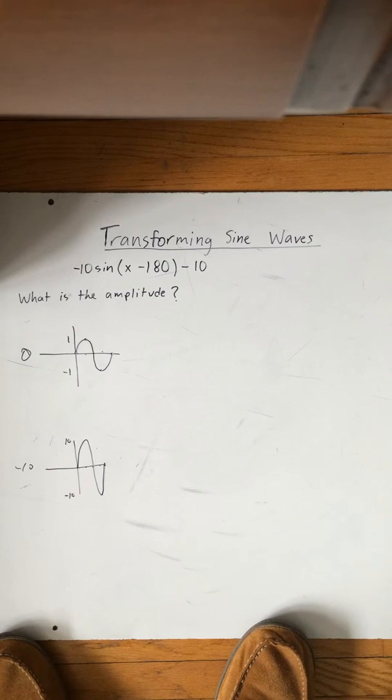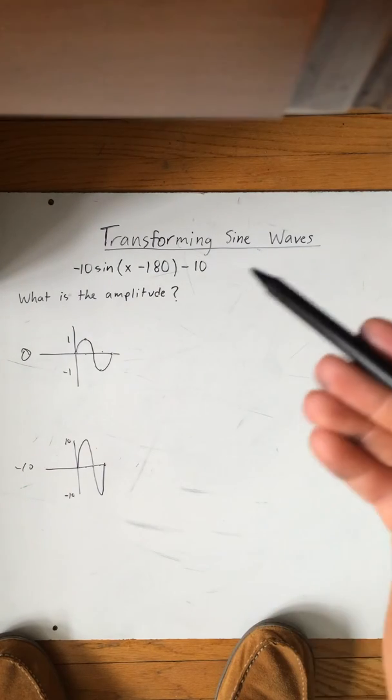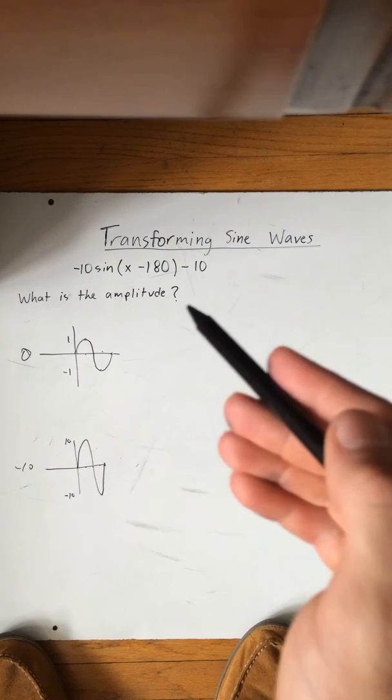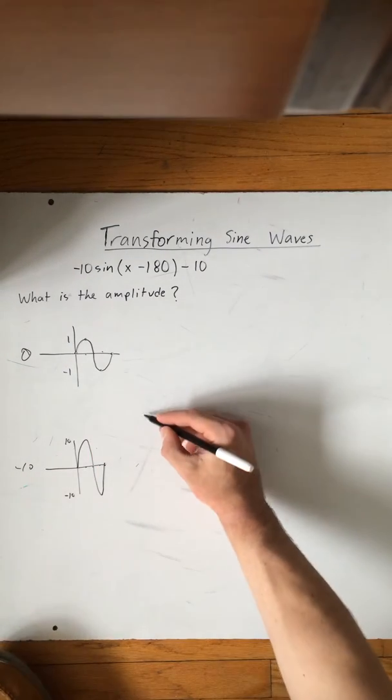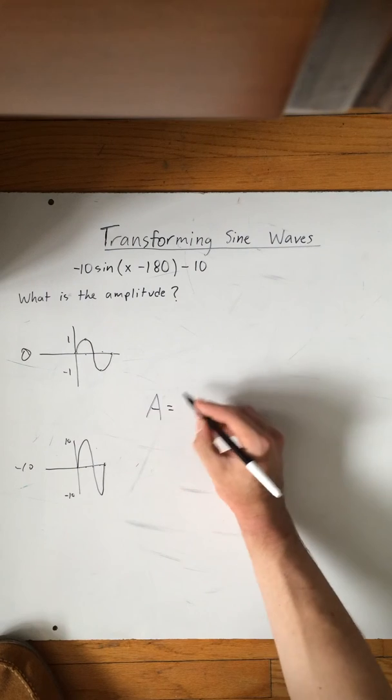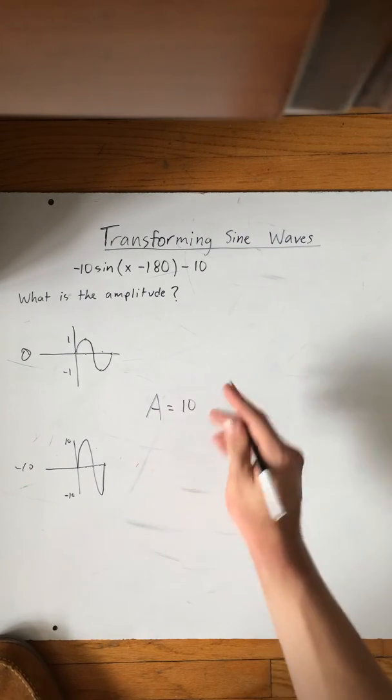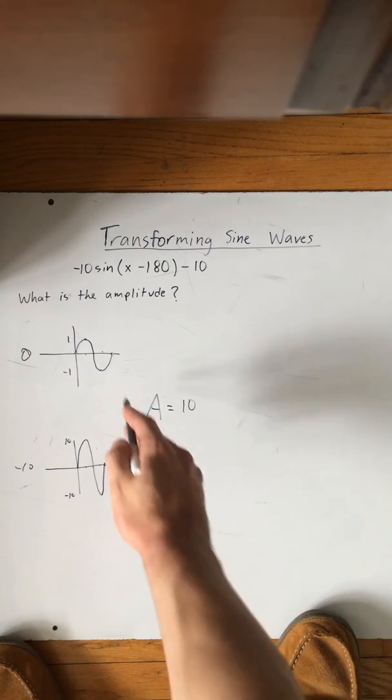So therefore, using this function here, the amplitude of this translated function will be equal to 10 because it now goes up 10 and down 10 instead of 1.